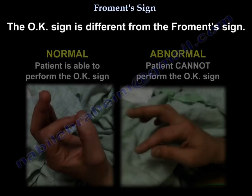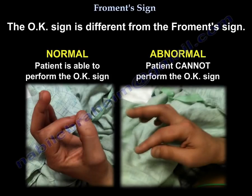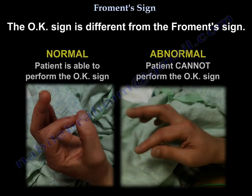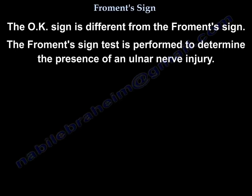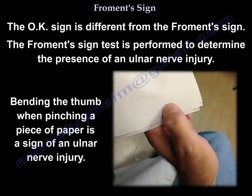The OK sign is different from Froment's sign. The Froment's sign test is performed to determine the presence of an ulnar nerve injury; bending the thumb when pinching a piece of paper is a sign of ulnar nerve injury.